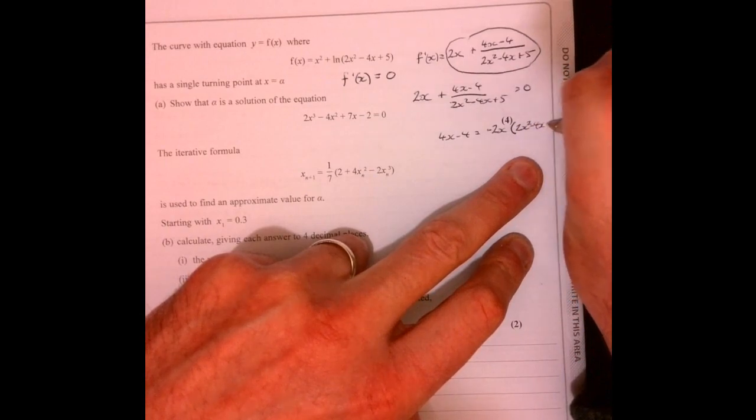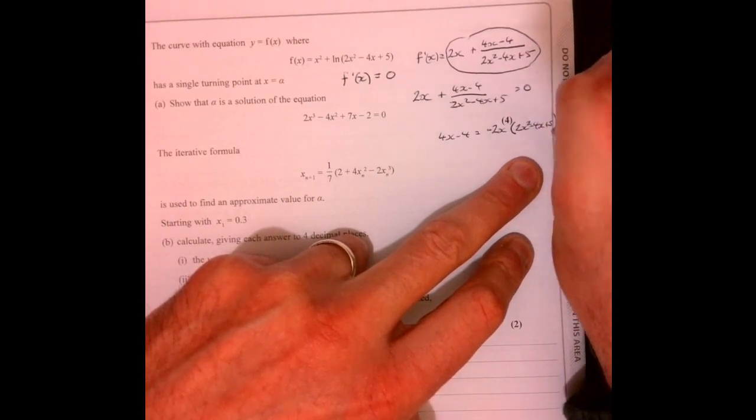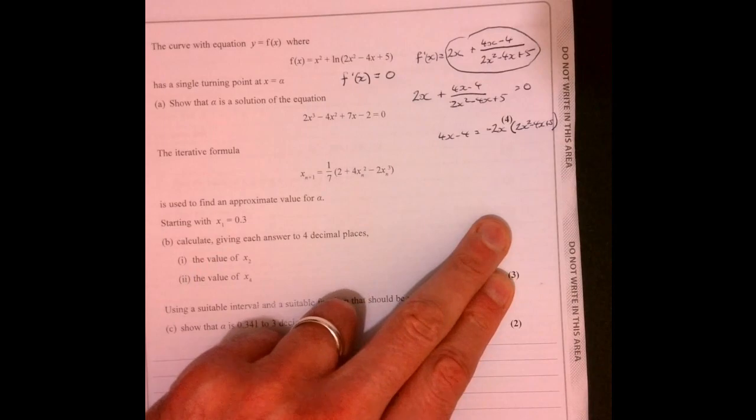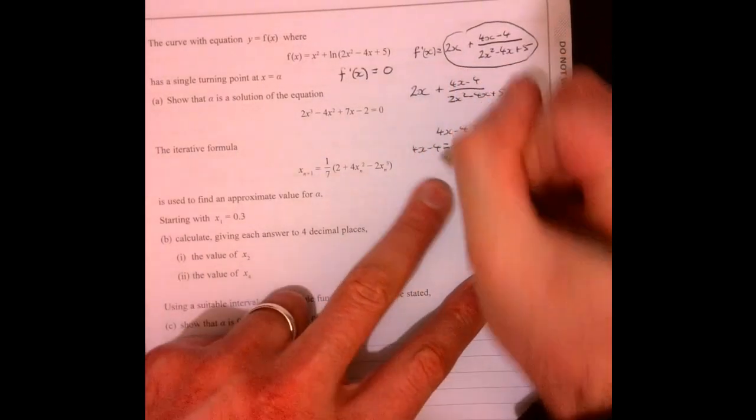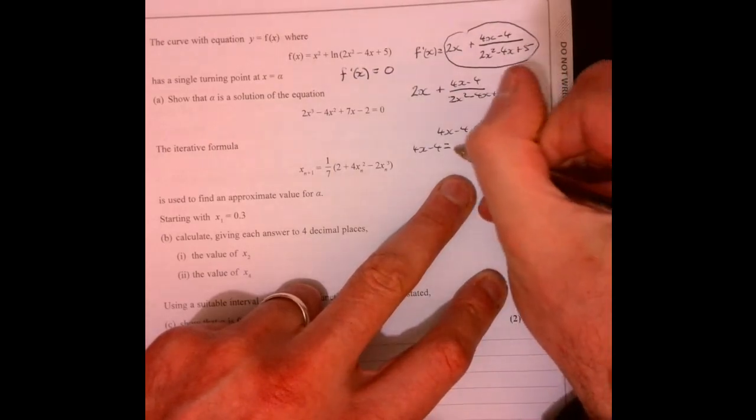So x squared minus 4x plus 5. Multiply that out, and we get minus 4x minus 4. Multiply this lot over here.